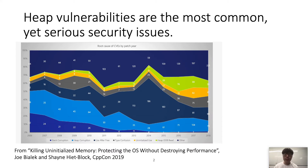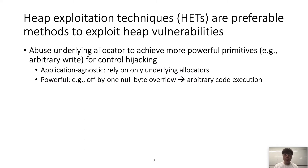As we already know, heap vulnerabilities are very common and serious security issues. According to Microsoft, 39% of CVEs in 2018 are related to heap vulnerabilities. One way to exploit these vulnerabilities is using heap exploitation techniques, which we call HET for short. HETs abuse the underlying allocator to achieve more powerful primitives for exploitation in the presence of vulnerabilities. This is preferable because it is application agnostic — it only depends on the underlying allocator.